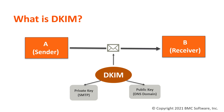So now when A sends another email, the private key will be encrypted in the email and DKIM will try to compare this private key with the one that is stored in the DNS domain.